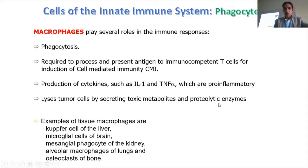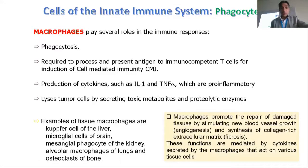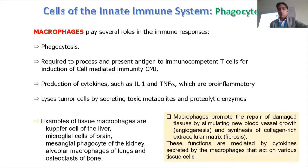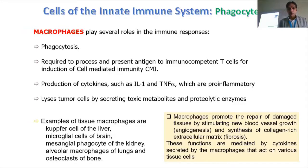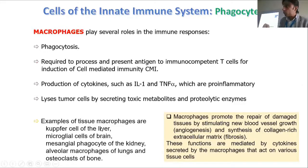There are several types of tissue macrophages present in different parts of the body. For example, Kupffer cells are the macrophages present in the liver. It's an important concept: different types of macrophages are present in different organs.